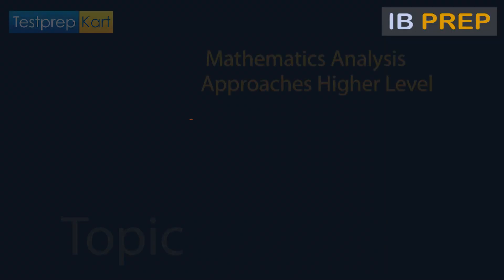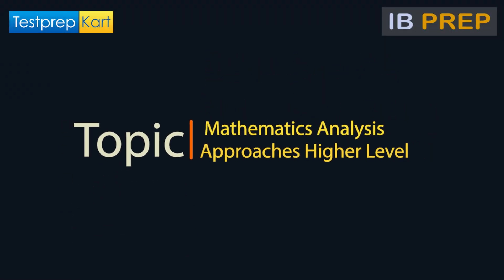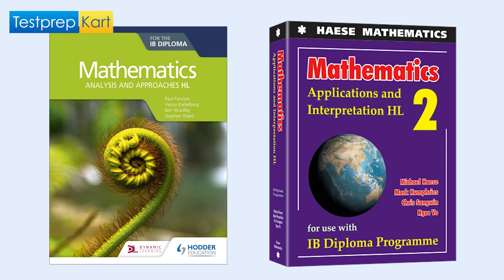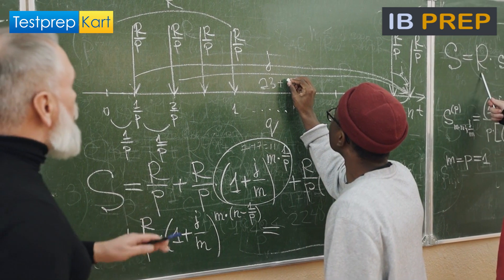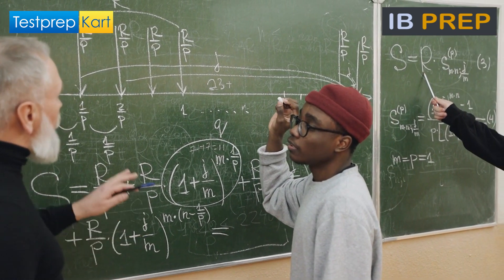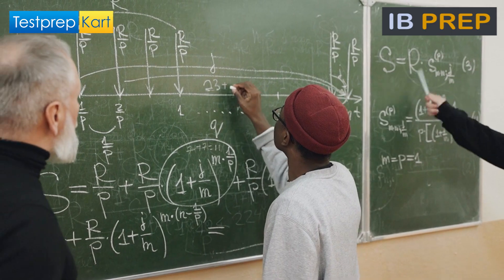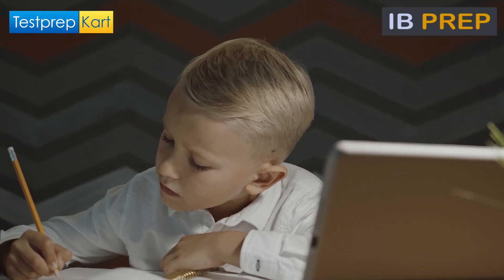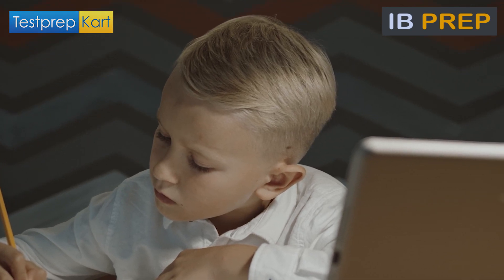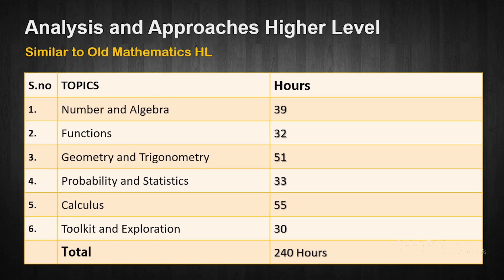Next, we have Mathematics Analysis and Approaches Higher Level. This is similar to the old Mathematics HL. Students who love mathematics and are very strong at it should take this course — it's for students who are interested in studying courses that involve math after high school, for example engineering. Like the old Math HL, it is for 240 hours. Topics: Number and Algebra 39 hours, Functions 32 hours, Geometry and Trigonometry 51 hours, Probability and Statistics 33 hours, Calculus 55 hours, Toolkit and Exploration 30 hours.